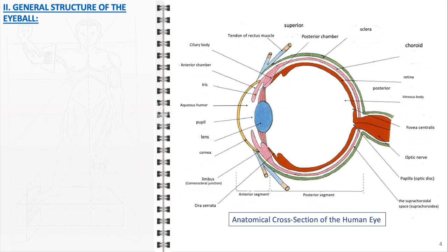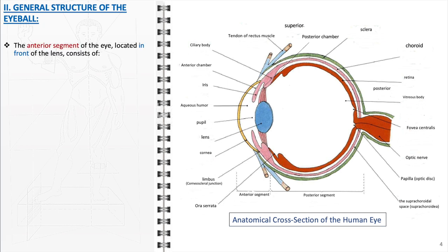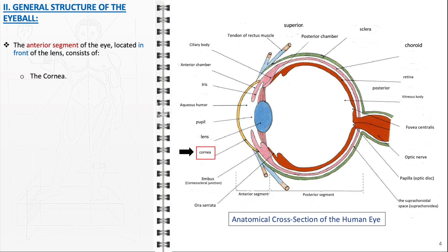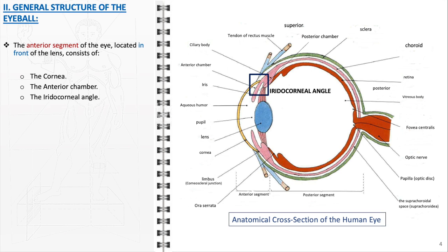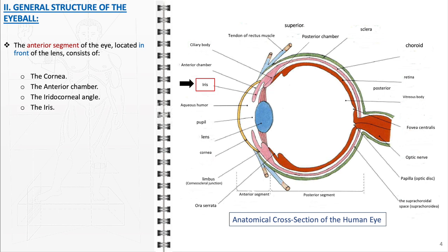Before we conclude, let's detail the anterior and posterior segments of the eye, along with their integral components. The anterior segment encompasses the structures at the front of the eye, up to the lens. It begins with the cornea, the clear front surface of the eye. Just behind the cornea lies the anterior chamber, a space containing the aqueous humor. At the iris and cornea junction is the iridocorneal angle. The iris, notable for its color, encircles the pupil.